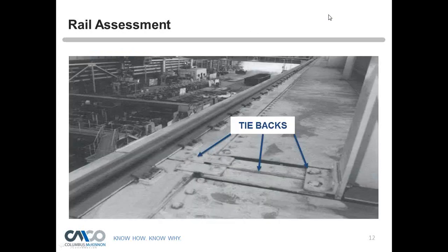Here we have a picture of tiebacks on a fairly large crane. Tom comments that this is a product put out by Gantrax — a very sophisticated runway installation system. Most tiebacks are simpler, with the I-beam tied back to the column with a weld, which removes lateral deflection on the I-beam that supports the crane runway.